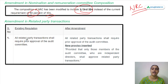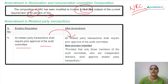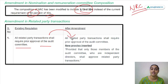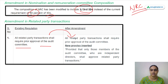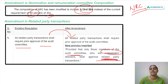There is also an amendment related to related party transactions. The existing regulation required all related party transactions to be approved by the audit committee. After the amendment, the regulation specifies that within the audit committee, only those members who are independent directors should approve these related party transactions.